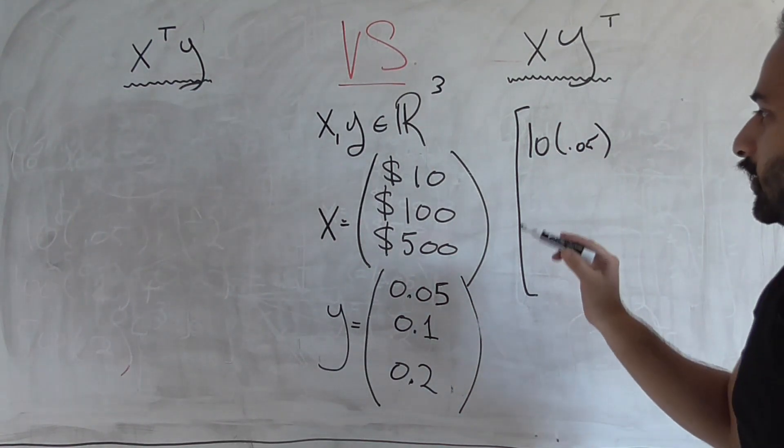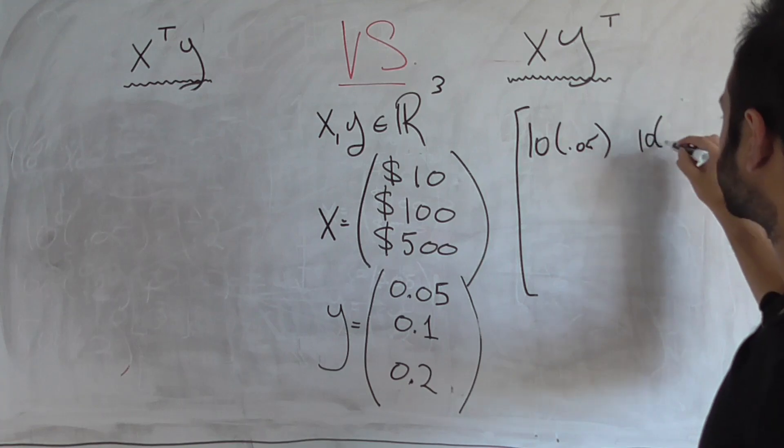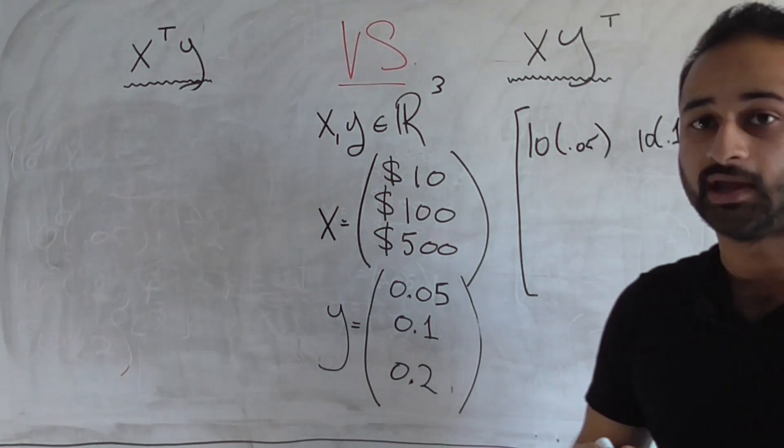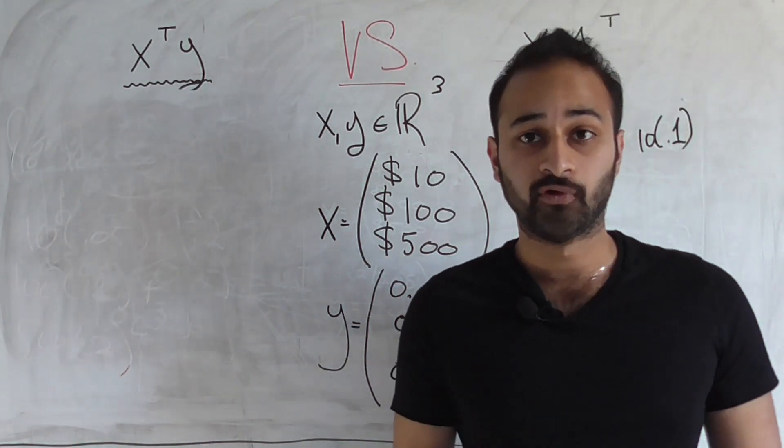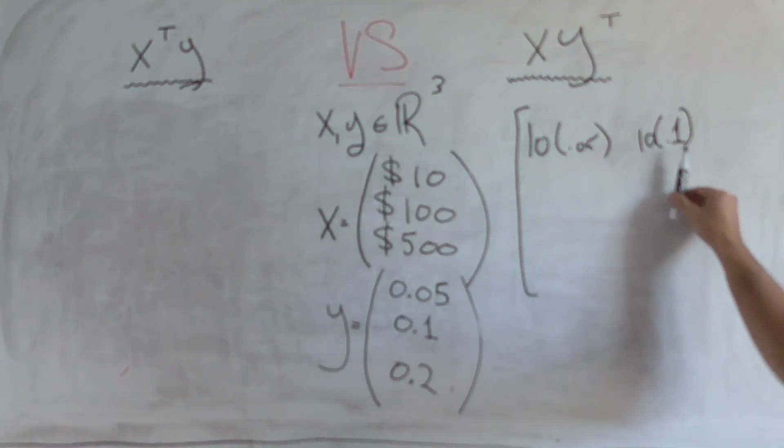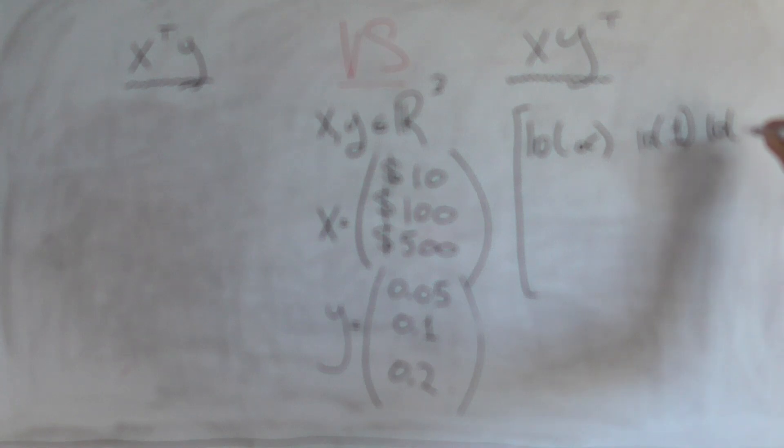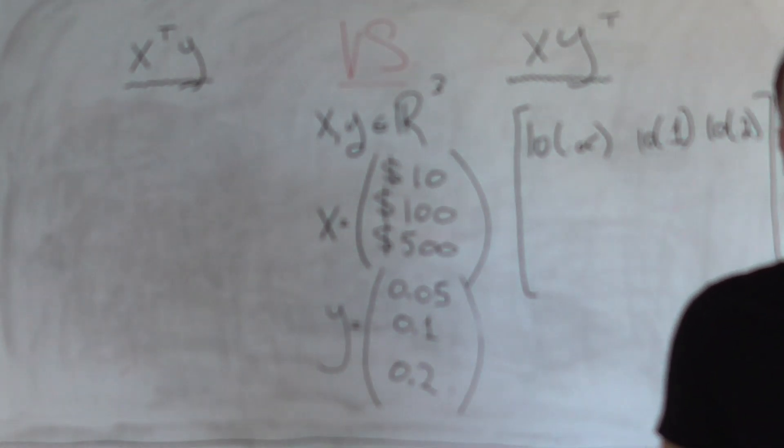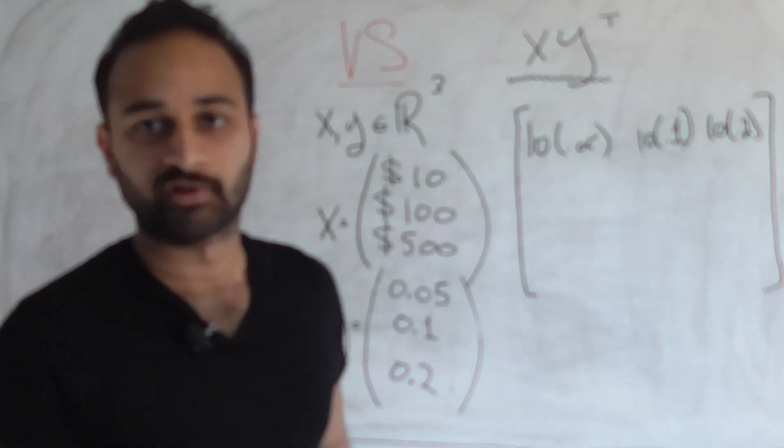Now what's the next element? It's going to be 10 times .1. 10 times .1. This tells me of my money spent on food, how much money is going towards the state taxes. So that's 10%. The last element is 10 times .2. How much of my food money went to federal taxes?